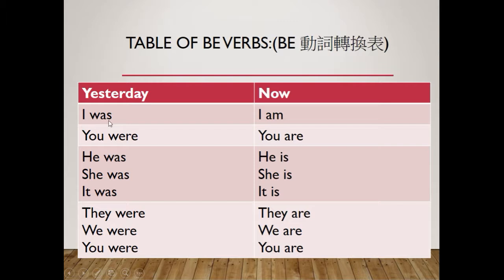When we use the be verbs in the present tense, we say: I am, you are, he is, she is, it is, they are, we are, and you are.